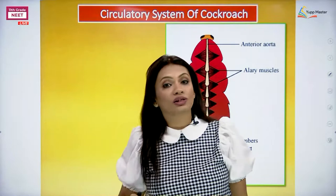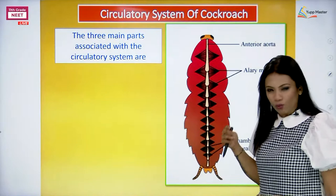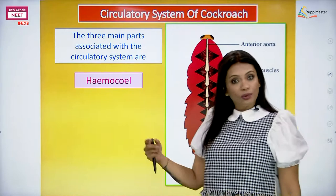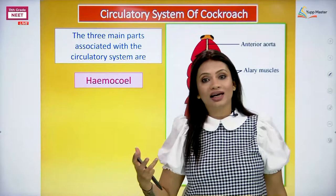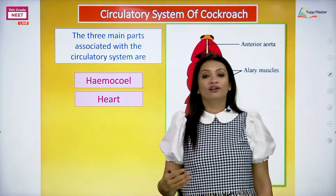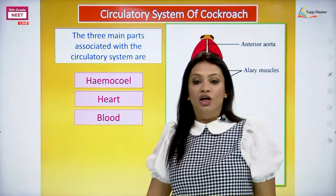Now when we come to the circulatory system of the cockroach, the three main parts associated with it are: first, the hemocoel - the body cavity in which the heart and all different organs are placed and circulating fluid flows; second, the heart; and finally, the blood or circulating fluid of the cockroach. These are the three main parts of the circulatory system which we are going to be covering today.